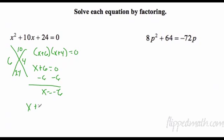Once I have my two, I set them each equal to 0. Subtract 6, so x could equal negative 6. Or x plus 4 equals 0, subtract 4, x could equal negative 4.